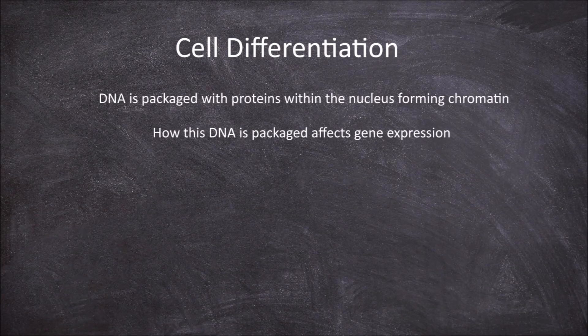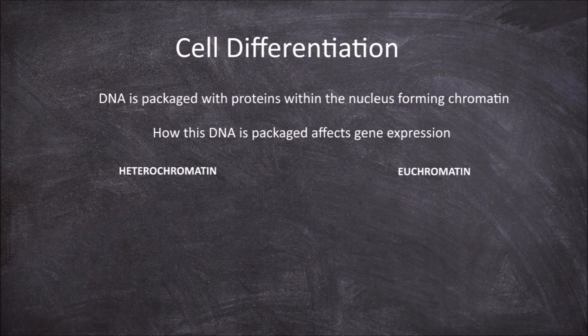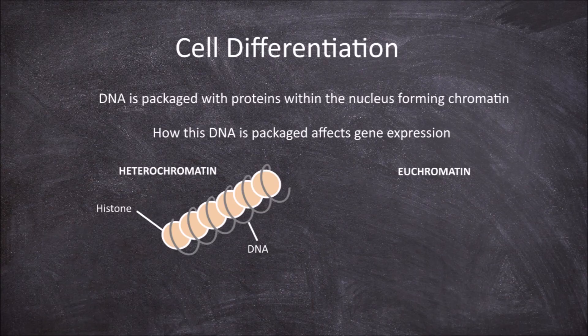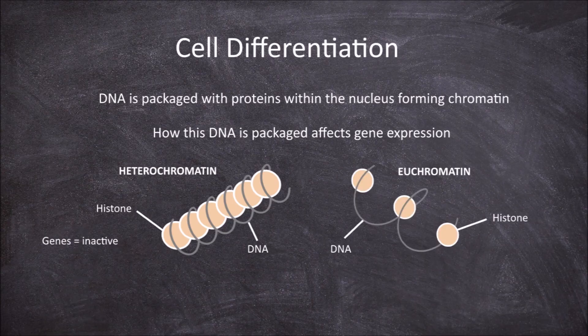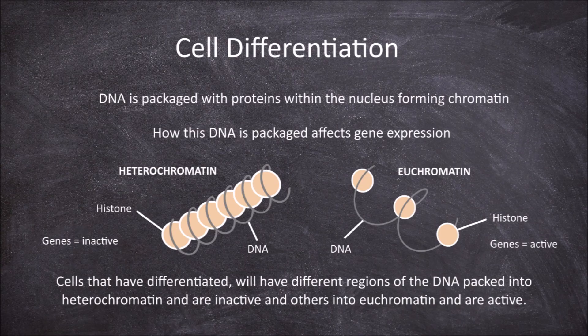How this DNA is packaged affects gene expression. Chromatin can be found in two forms: heterochromatin and euchromatin. Heterochromatin is the tightly packed, condensed form of chromatin, and the genes packed in heterochromatin are inactive. Euchromatin, on the other hand, is lightly packed, and this is where the active genes of the specific cell are found, ready and accessible for transcription. Cells that have differentiated will have different regions of DNA packed into heterochromatin, which are inactive, and other regions into euchromatin, which are active.